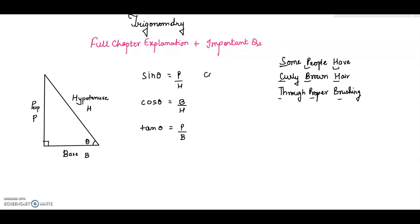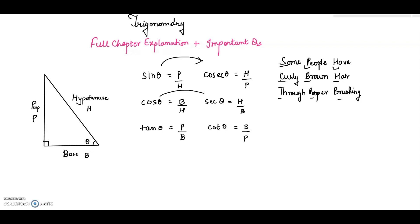Now for cosec theta, it is H by P — that is the reciprocal of sine theta. For sec theta it is the reciprocal of cos theta, that is H by B. For cot theta it will be B by P. So sine theta is reciprocal of cosec theta, cos theta is reciprocal of sec theta, and tan theta is reciprocal of cot theta.